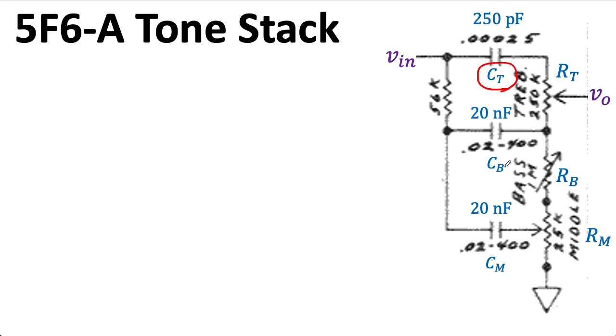In general, people think of this as the treble cap, the bass cap, and the mid-range cap. Although, as you'll see in a second, everything in this circuit interacts. Nothing is buffered. So, the three pots that are actually presented to the musician are the treble control, the bass control, and this middle control.